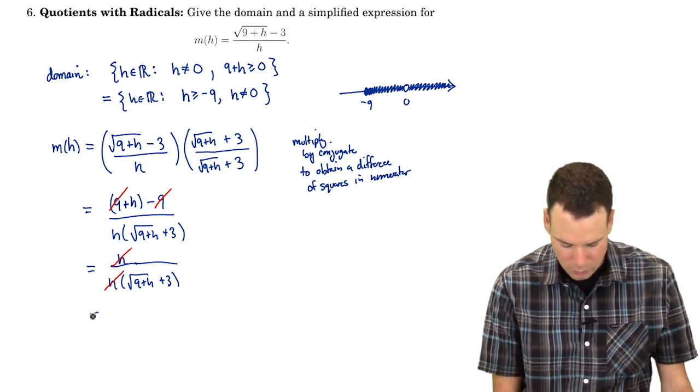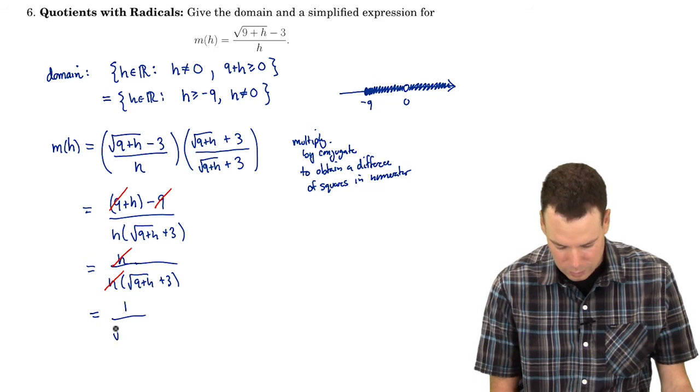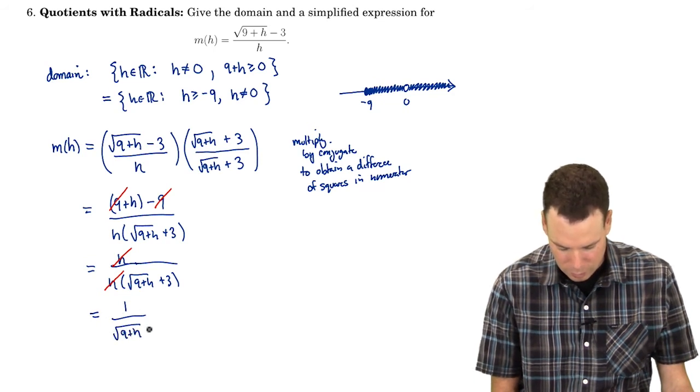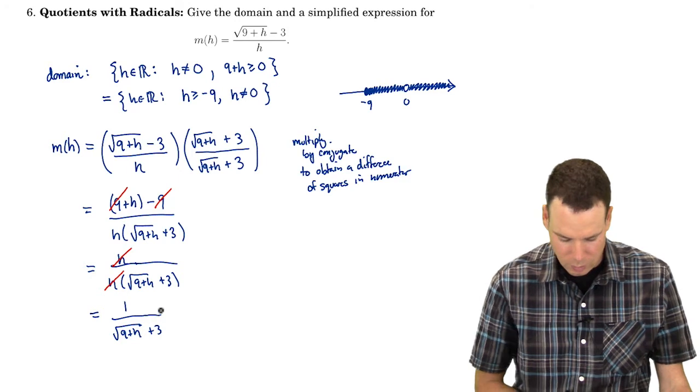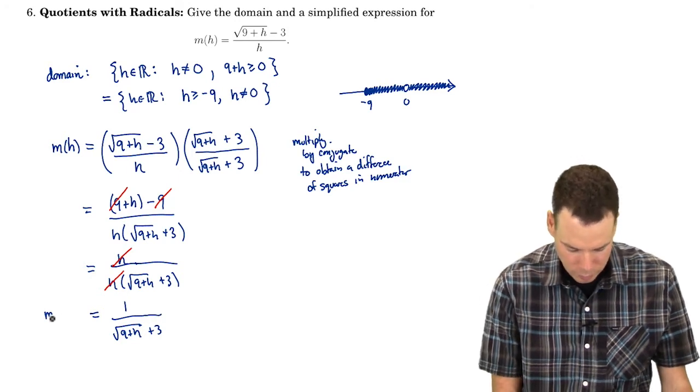So I cancel the h off and I've got this simplified expression. It's simplified because I was able to cancel something off. I'll say a little bit more about that in a second.